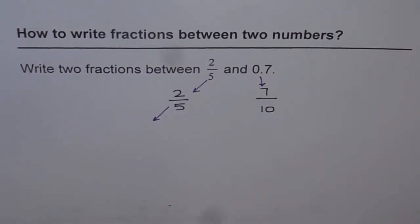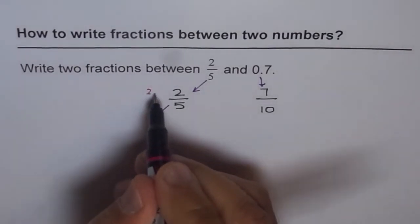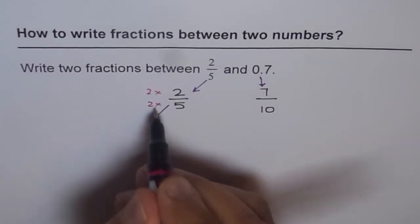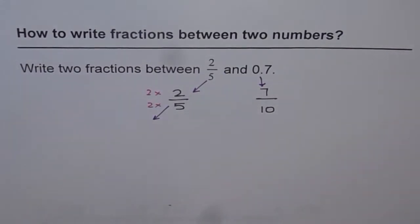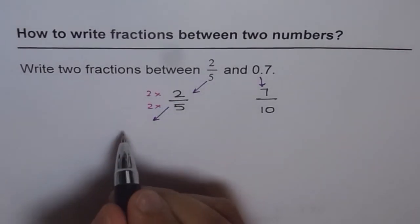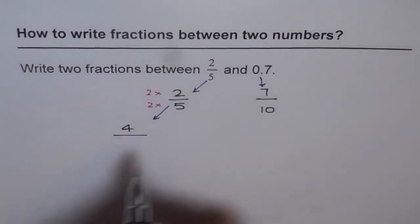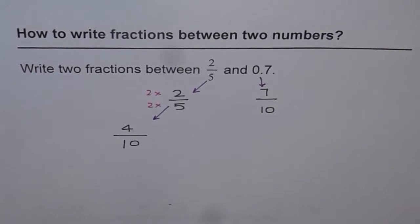How can we get denominator of 10? Multiply 2 over 5 by 2. Then see what we get. 2 times 2 is 4, and 2 times 5 is 10. So we get 4 over 10.